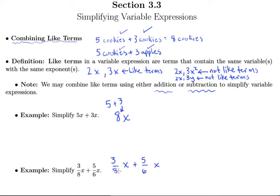so I'll multiply top and bottom of this fraction by 3, top and bottom of this fraction by 4. And so what I'll end up with here is 9 24ths x plus 20 24ths x, and of course I can combine these into 29 24ths x.